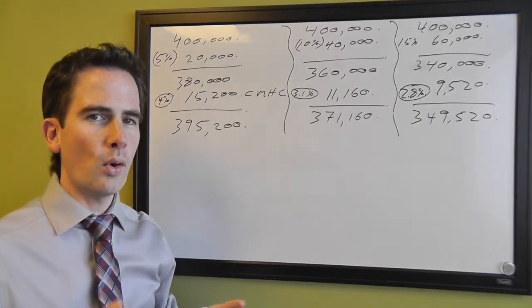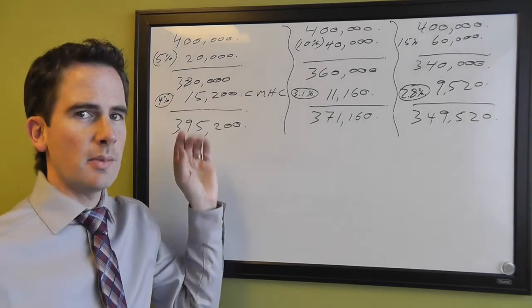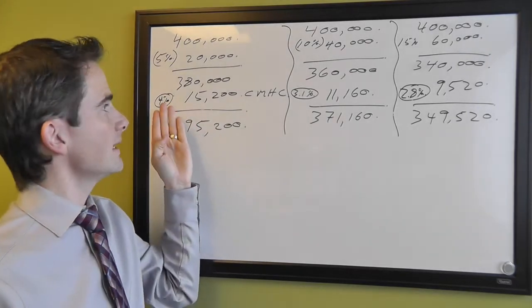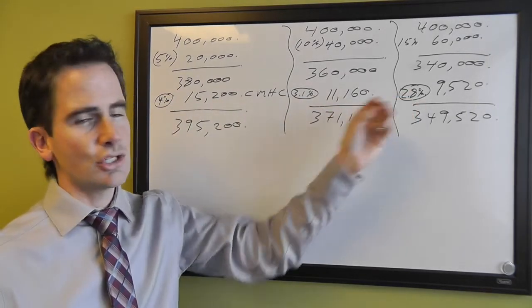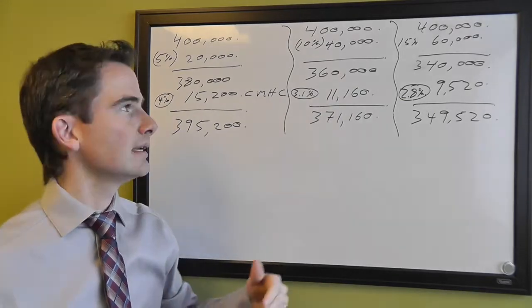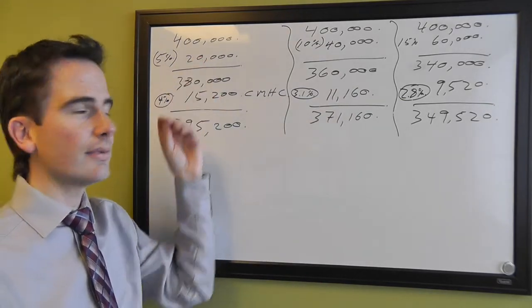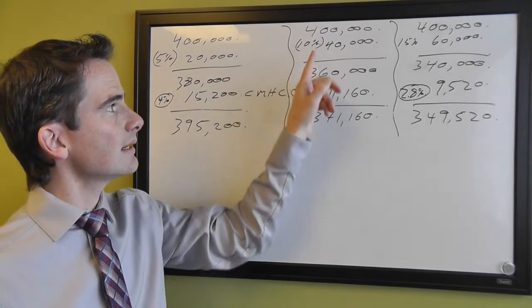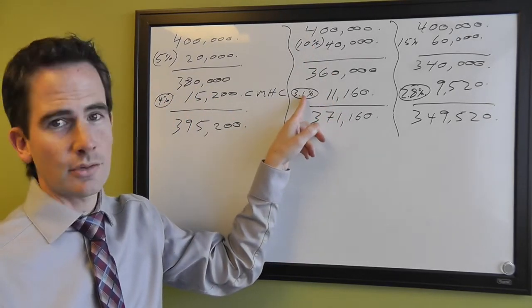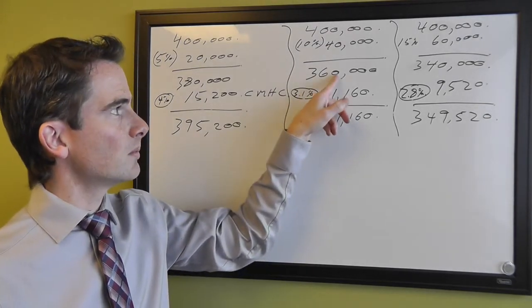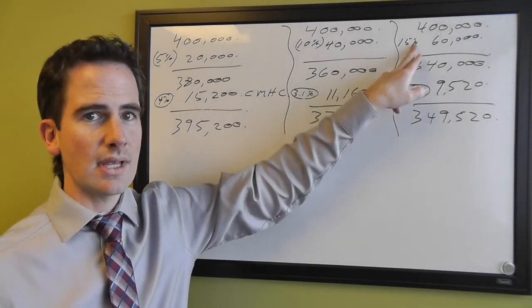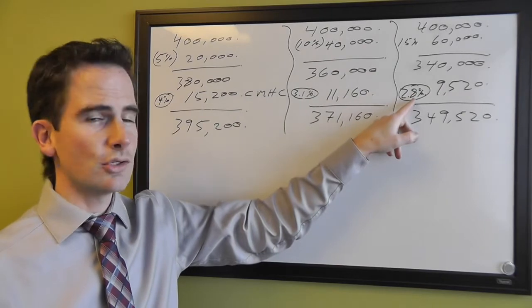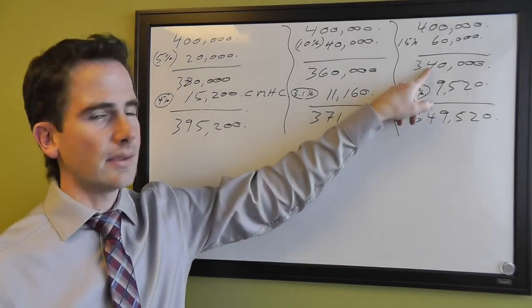My whole point here is that the CMHC premium is not always the same. It's different based on how much you put as a down payment. So if you're putting 5% down, the premium is based on 4% of the mortgage amount. If you're putting 10% down, the premium is 3.1% of the mortgage amount. If you're putting 15% down, the premium is 2.8% of the mortgage amount.